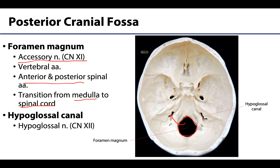Lastly, the hypoglossal canals are a bit more difficult to identify, closely associated with the foramen magnum. It is through these canals that the hypoglossal nerves, cranial nerves twelve, exit the skull.